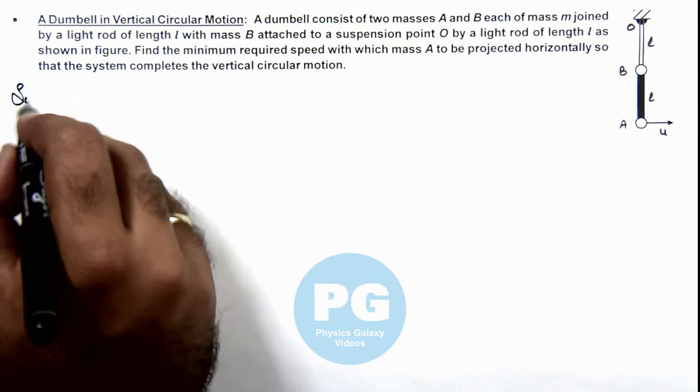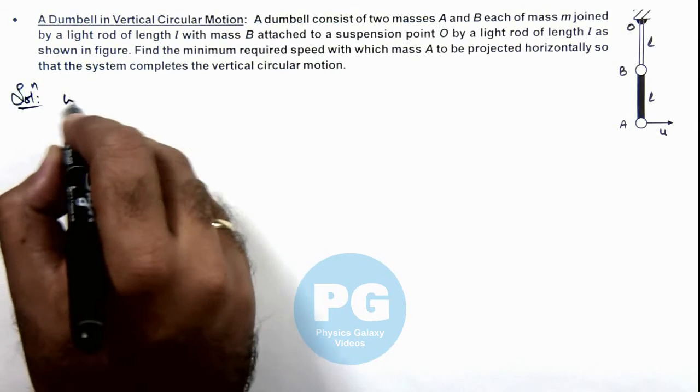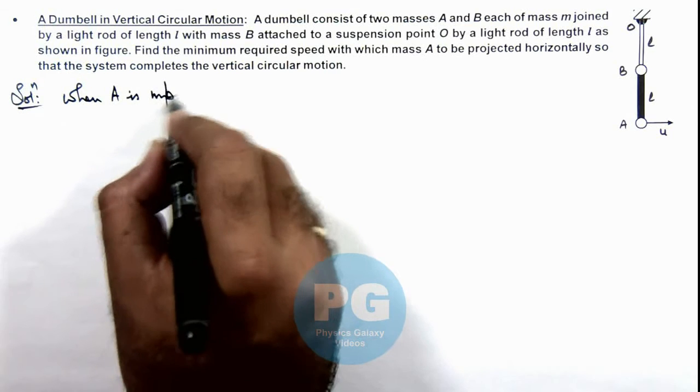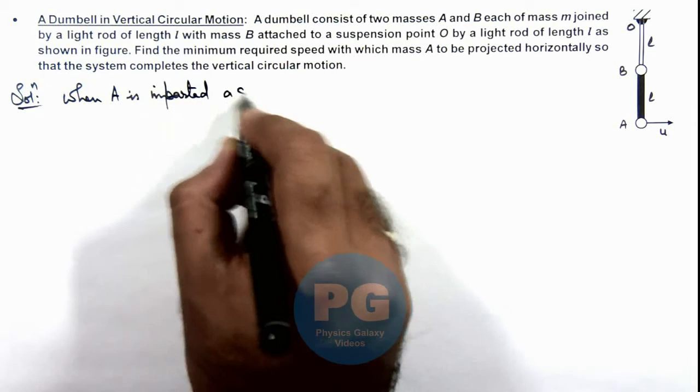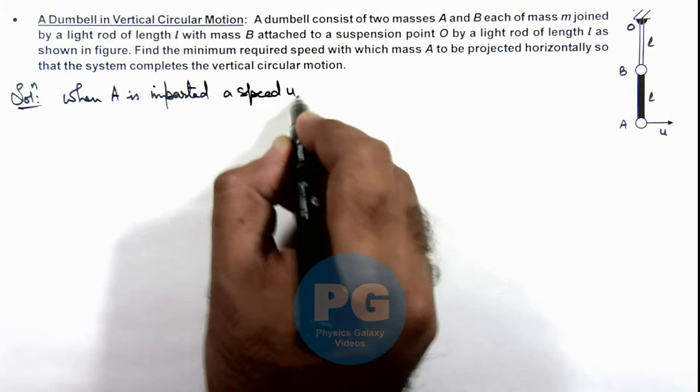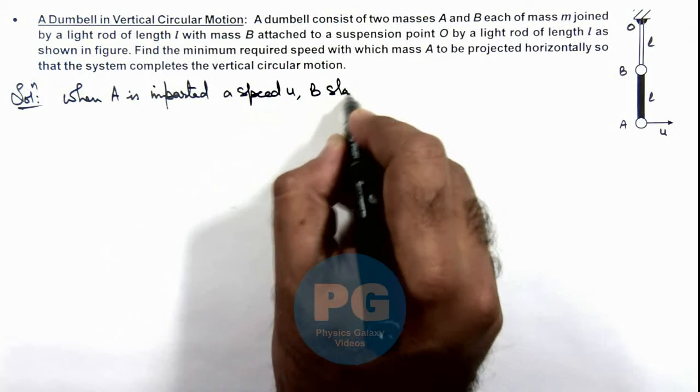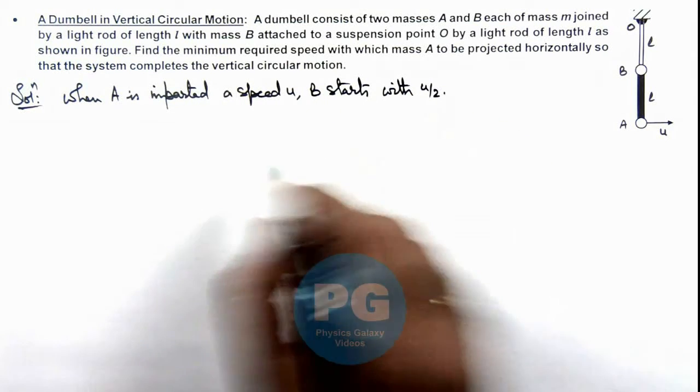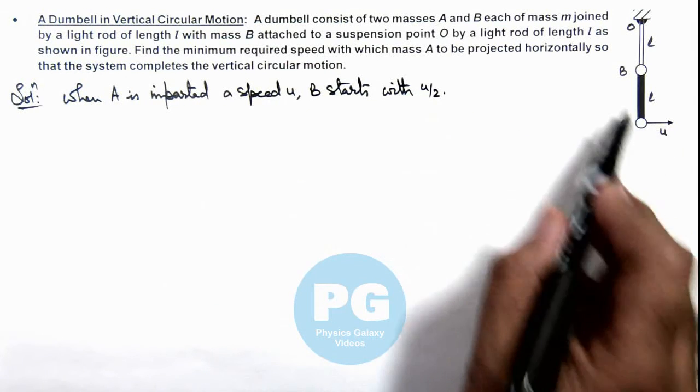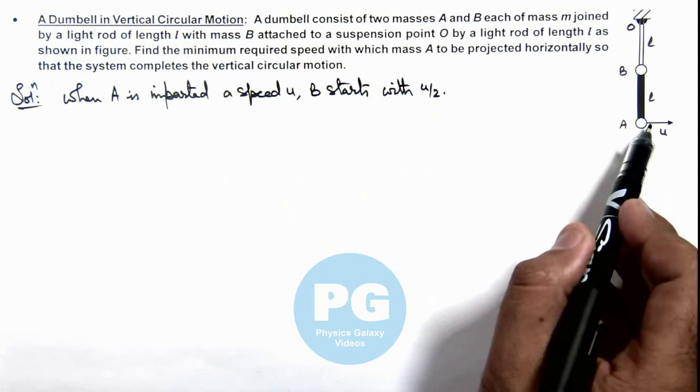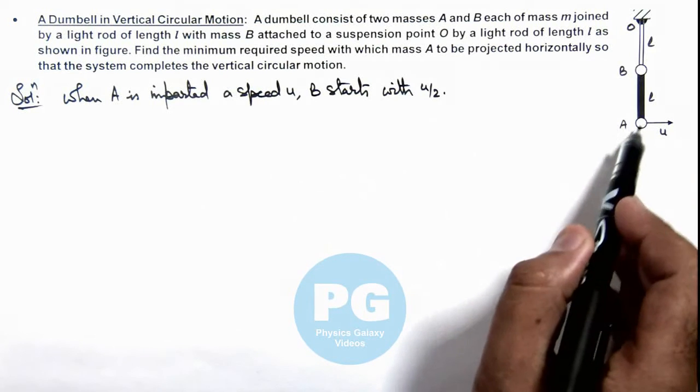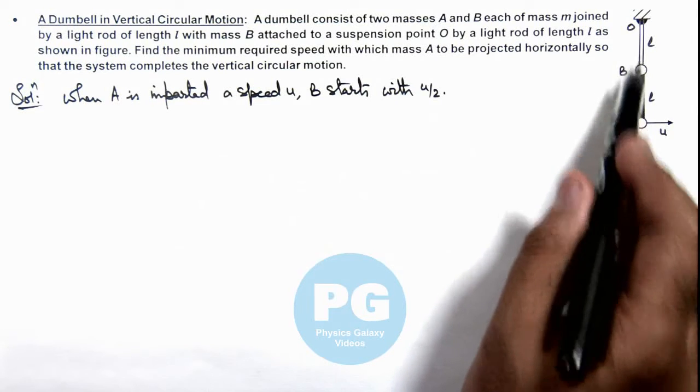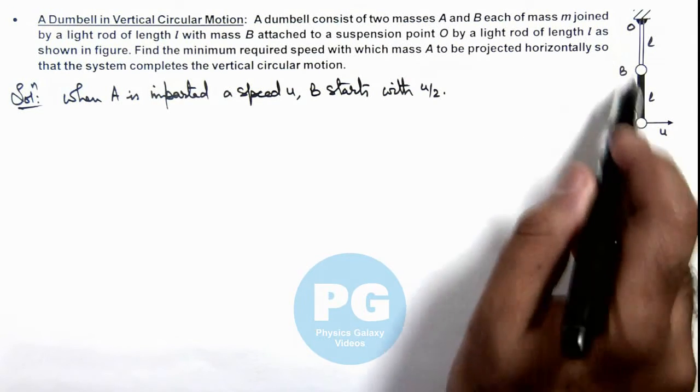When A is imparted a speed u, B starts with u/2, because due to this speed u the angular speed of this motion would be ω = u/(2l), and the speed of B attained would be lω, that will be u/2, as it is located at half the length.